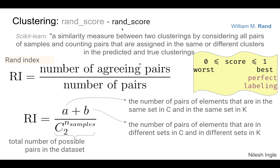Next is the Rand score — 'Rand' refers to William M. Rand, who worked on this problem. The Rand index is defined as the number of agreeing pairs divided by the total number of pairs. A value of one indicates the best score and zero indicates the worst. Agreeing pairs include pairs of elements in the same set in both C and K, and pairs in different sets in both C and K. The total number of possible pairs gives the Rand index.